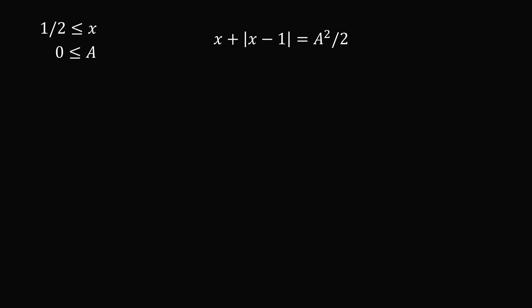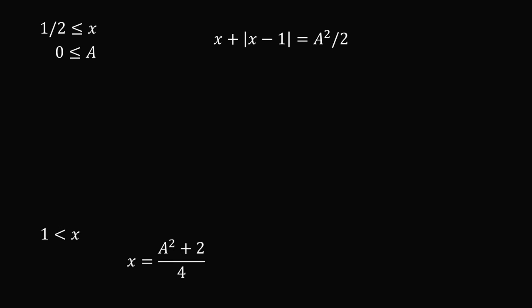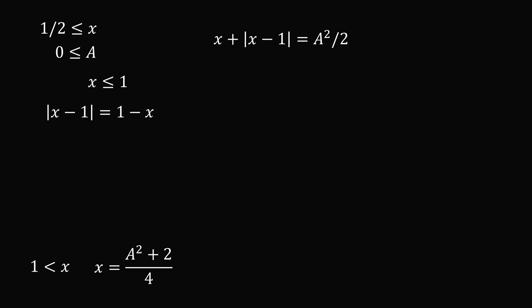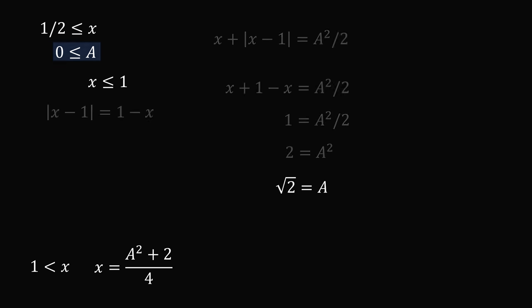Now we have an equation with an absolute value term, so we work this out in cases. Case one: suppose x is greater than 1. Then the absolute value of x minus 1 equals x minus 1, so the equation becomes x plus x minus 1 equals a squared over 2, giving 2x minus 1 equals a squared over 2, so x equals a squared over 4 plus 1 half, which means x equals a squared plus 2 all over 4. Case two: x is less than or equal to 1. Then the absolute value of x minus 1 equals 1 minus x, so x plus 1 minus x equals a squared over 2, the x terms cancel, giving 1 equals a squared over 2, so a squared equals 2, and since a is greater than or equal to 0, a equals the positive square root of 2.